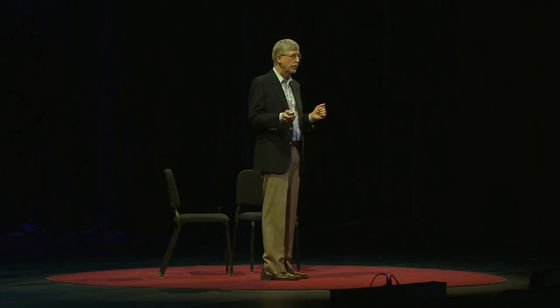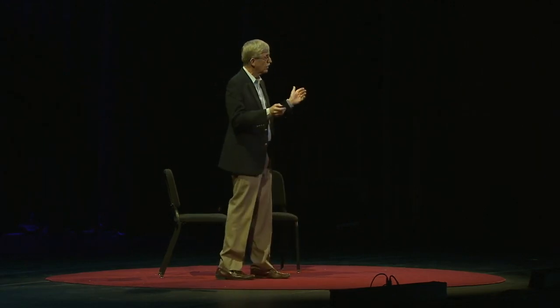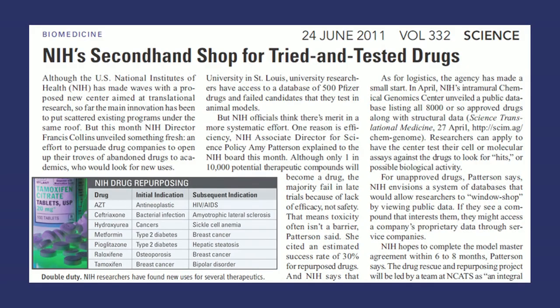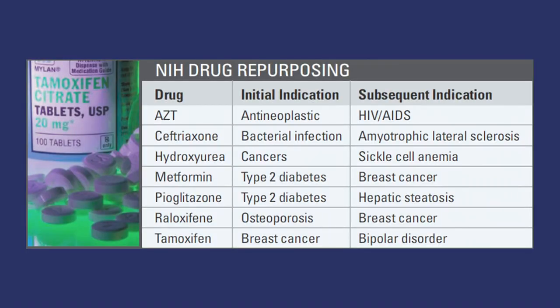That could be a phenomenally valuable activity. We have many discussions now between NIH and companies about doing this that are looking very promising. There are quite a number of success stories — the first drug for HIV/AIDS was not developed for HIV/AIDS. It was developed for cancer: AZT. It didn't work well for cancer but became the first successful antiretroviral. To make this generalizable, we need partnerships between academia, government, the private sector, and patient organizations. At NIH we've started the new National Center for Advancing Translational Sciences, launched last December, with this as one of its goals.